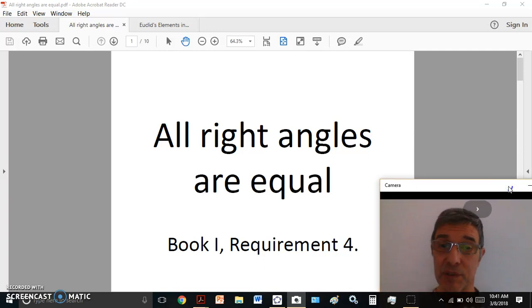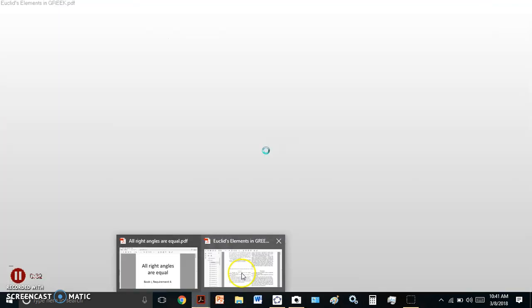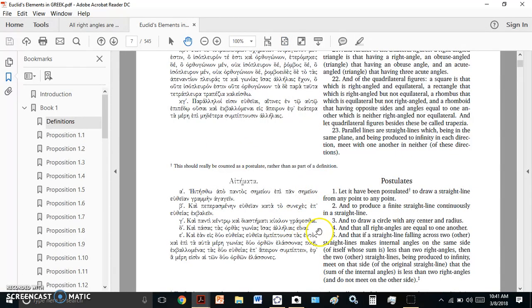Not postulates or axioms, but requirements. The Greek word for the particular section that we're talking about is aetimata. And if we look at the original Greek here, we'll see that it says, Ittiszo apopandos simeou epi pan simeon eftean grammeen agagin.